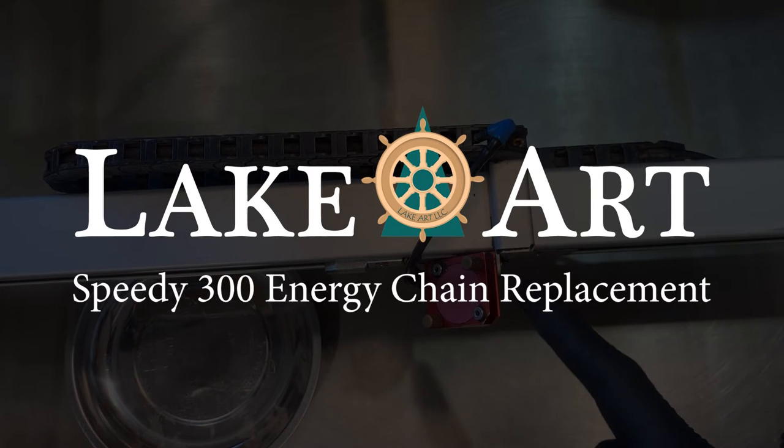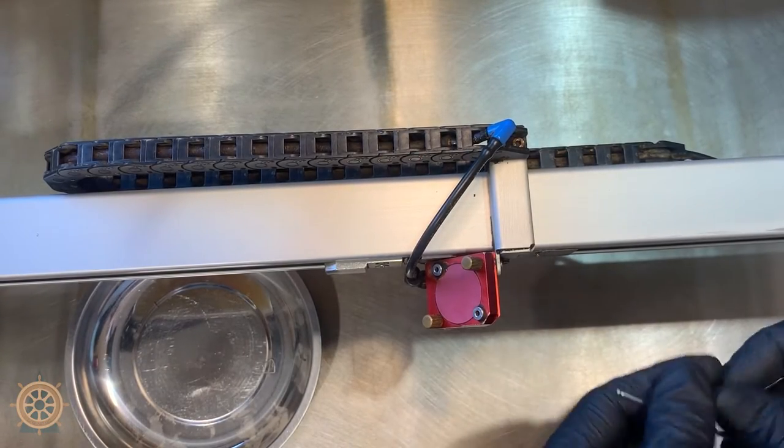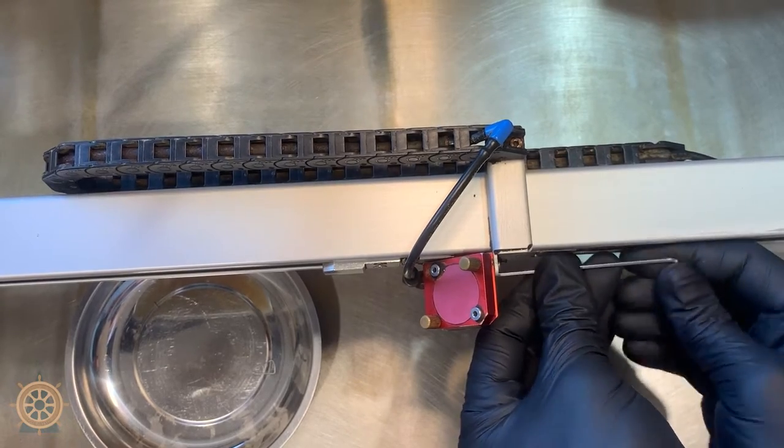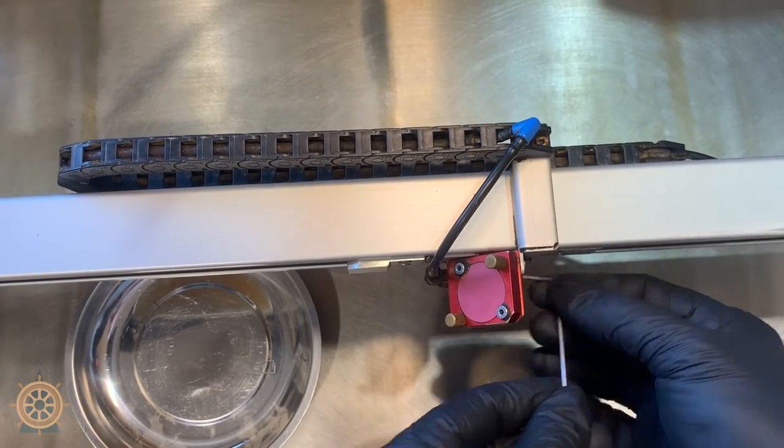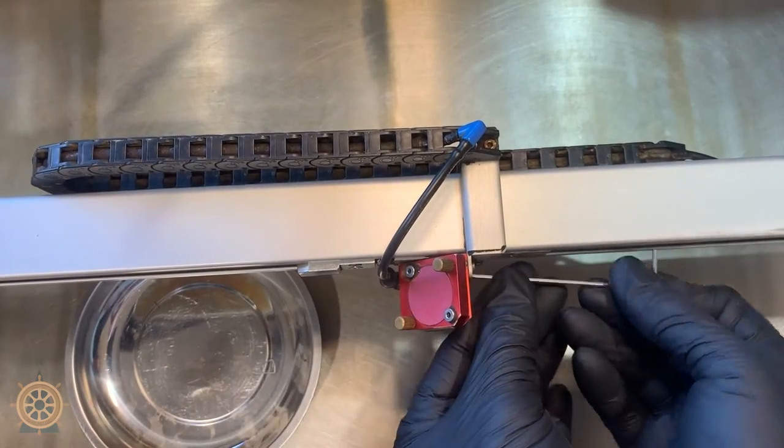All right, so today we're doing the energy chain on the Speedy 300. To start, we're going to take these three screws out of this bracket that's connected to the head. These side ones are the ones you should take out first because they would get out of the way of removing that back screw.